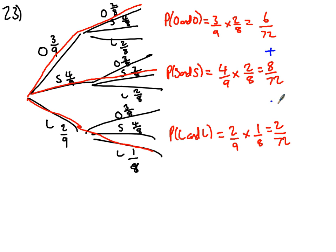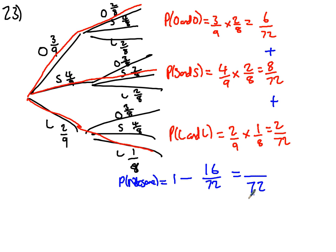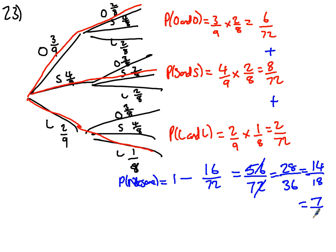Adding the same-flavour probabilities: 6/72 + 12/72 + 2/72 = 20/72. Wait — correcting an earlier error where I misread a 3 as a 2 — that gives us 20/72 for same flavours. So probability of not the same = 1 − 20/72 = 52/72. You can cancel that down, but the answer is 52 out of 72.